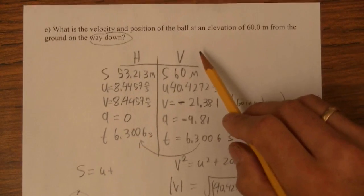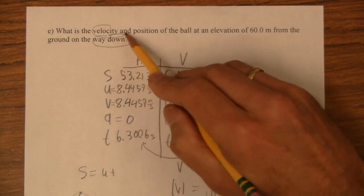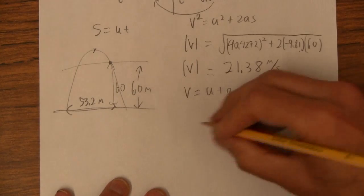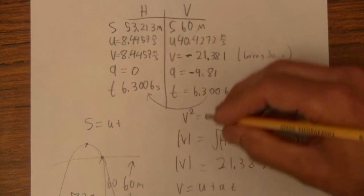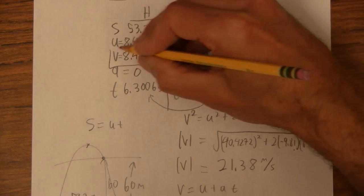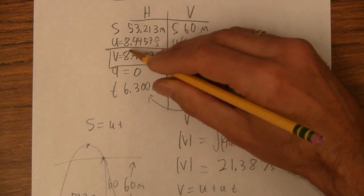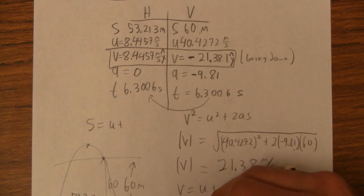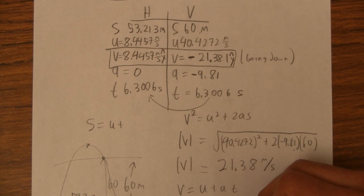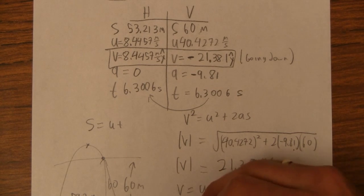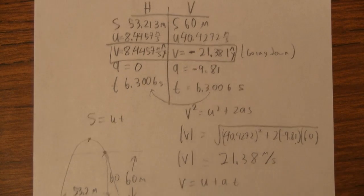Now, what is the velocity of the ball when it's at 60 meters? There are two ways to write this velocity. Way number one is simple — just take the components. The x-hat component is 8.45 meters per second, and the y-hat component is negative 21.4 meters per second. So as a component vector: 8.45 x̂ + (−21.4) ŷ meters per second.